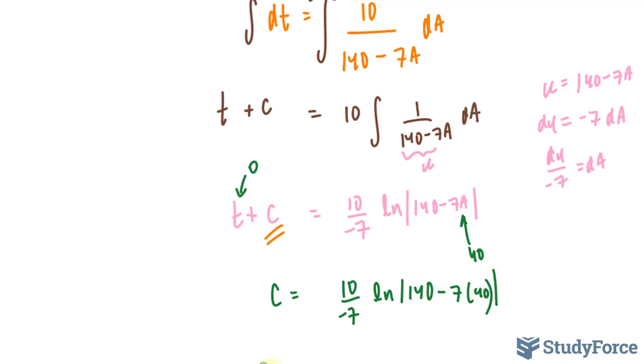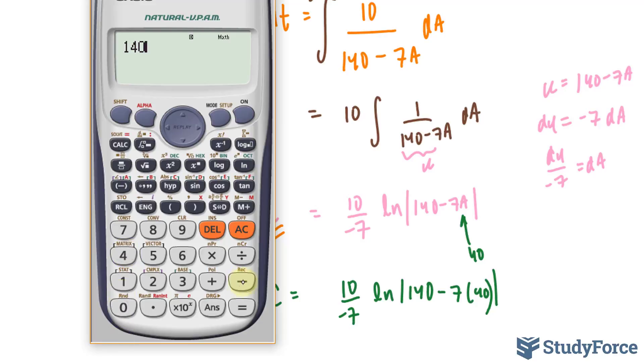So we have, I'm going to find out what that is, 140 minus 7 times 40. That gives me negative 140. Take the absolute of that, I have ln of 140 times 10 divided by negative 7.